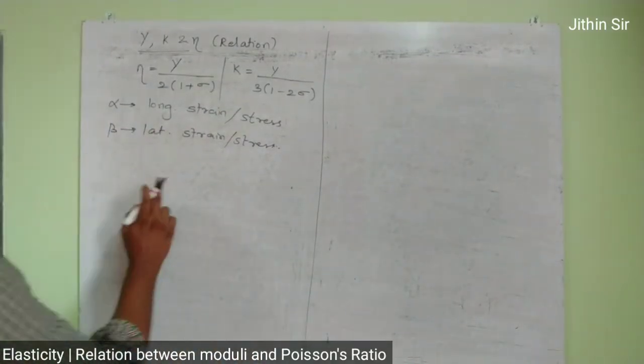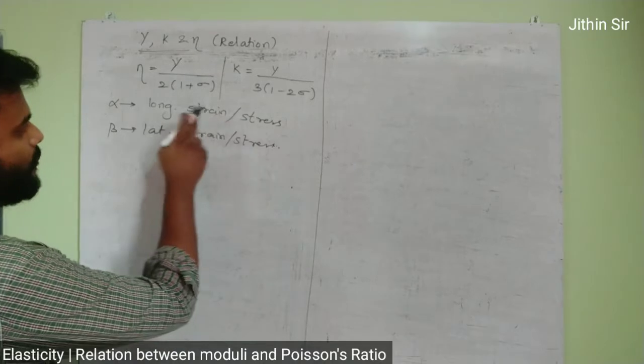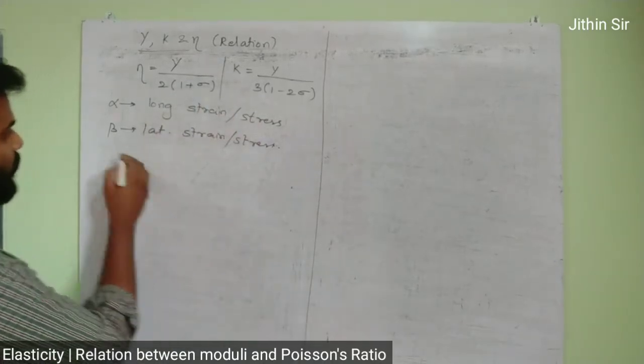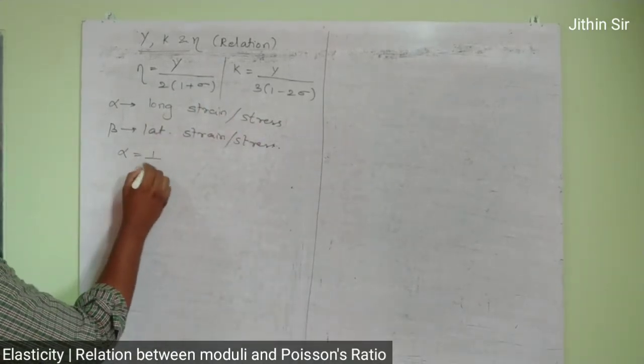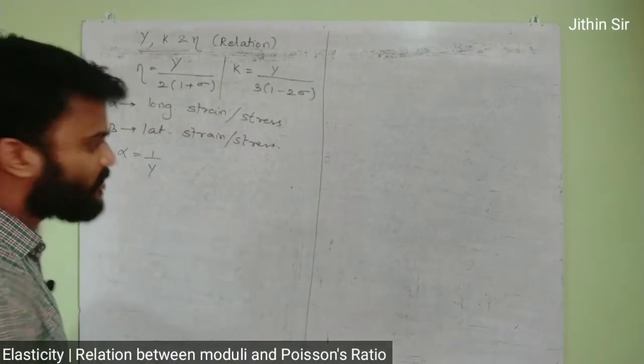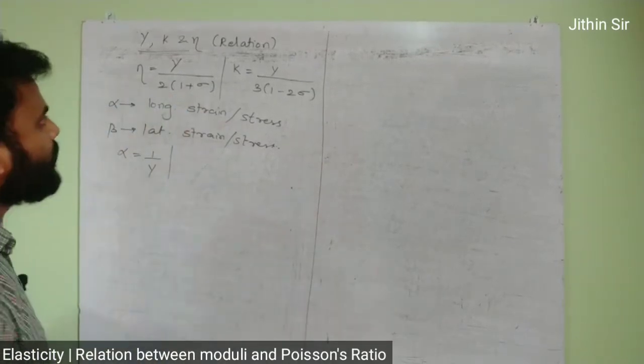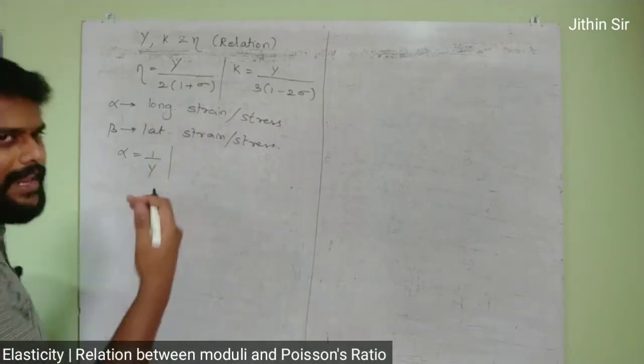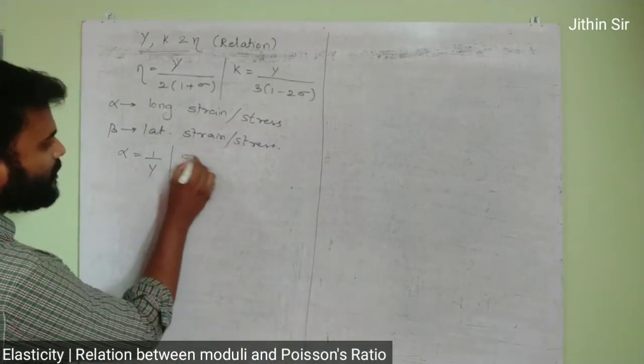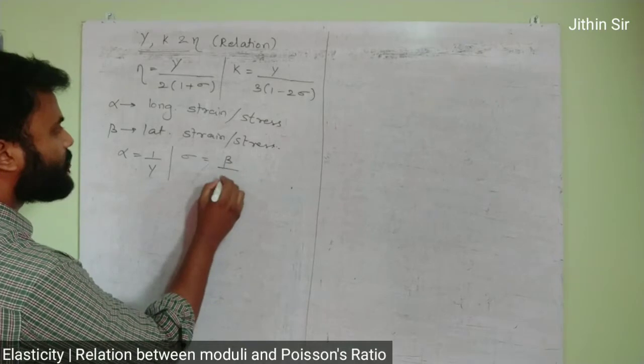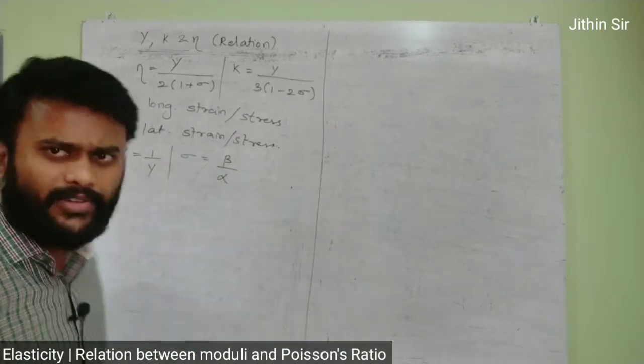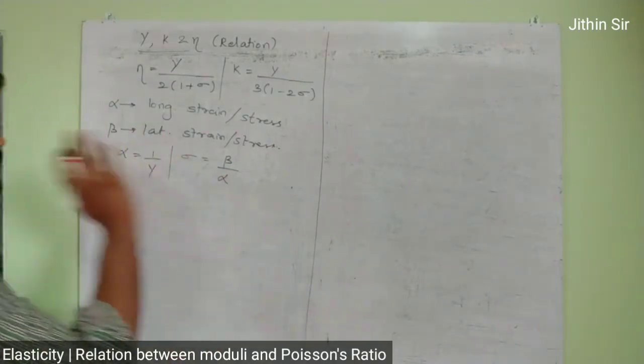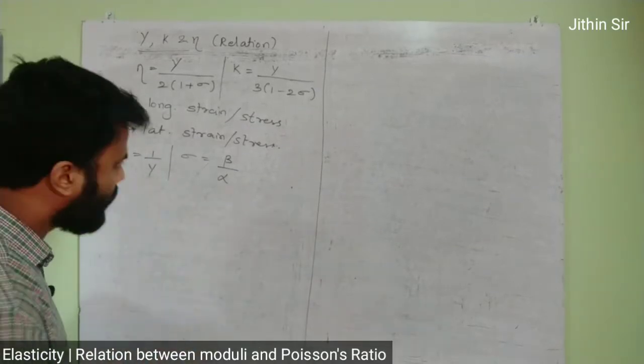Now we know that Young's modulus is stress upon strain, and alpha is strain upon stress. We can say that alpha is one upon Young's modulus. This is terminology we keep in mind. In other words, beta is lateral and alpha is longitudinal. Poisson's ratio is the ratio of lateral strain upon longitudinal strain. Therefore, sigma equals beta upon alpha. These are our terminologies.